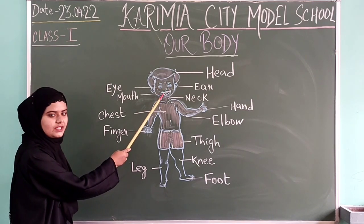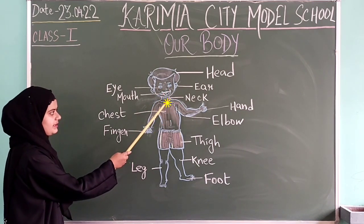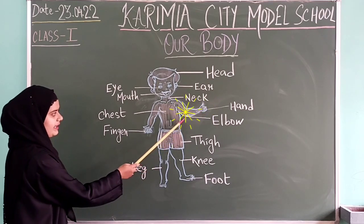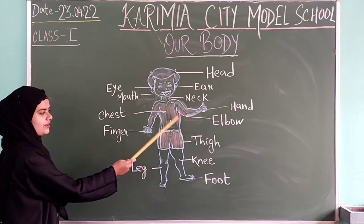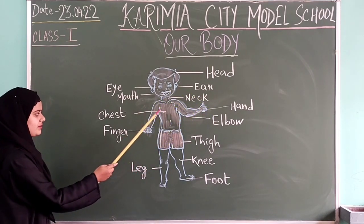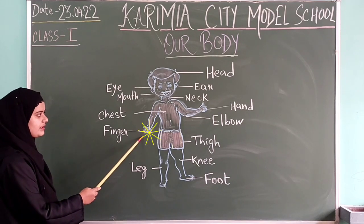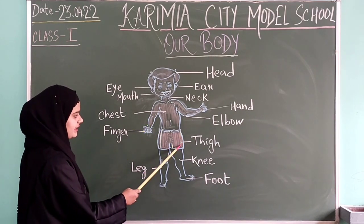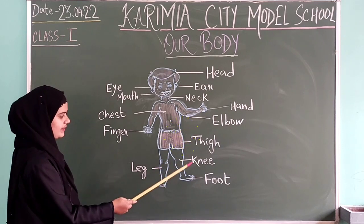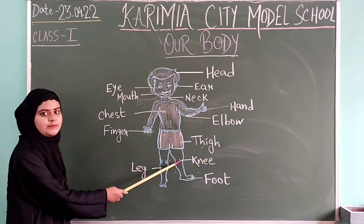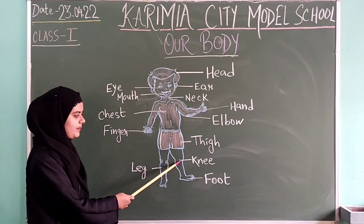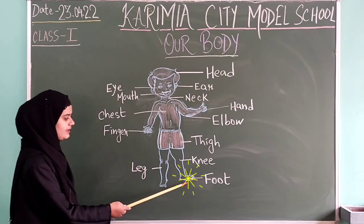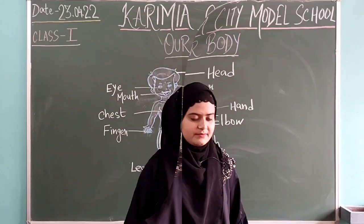We speak with our mouth. Neck. Hand. Elbow. Chest. Finger. We have ten fingers. Thigh. Knee. Knee helps us to bend. Leg. And foot.